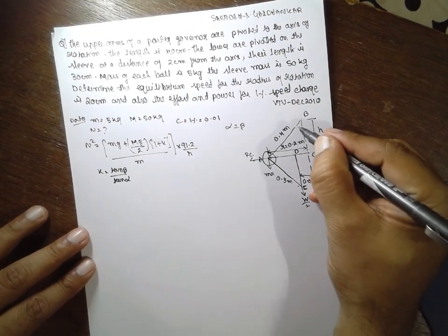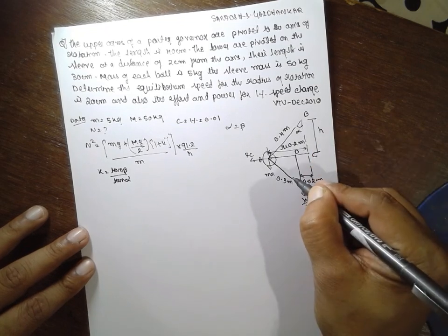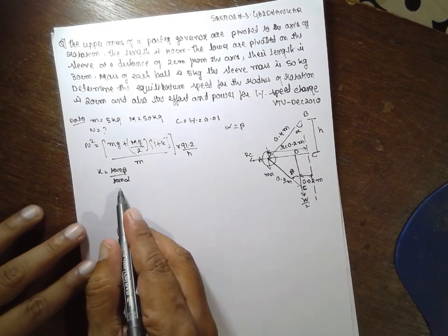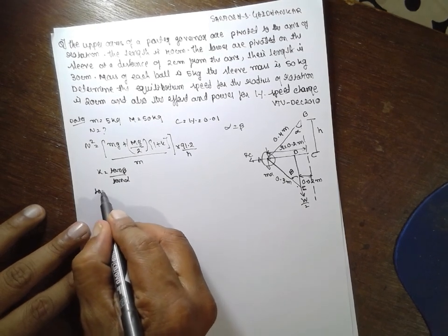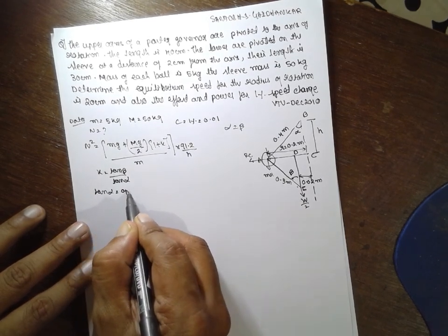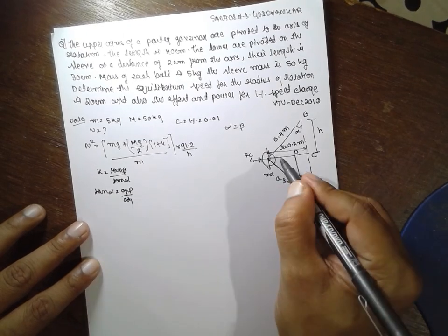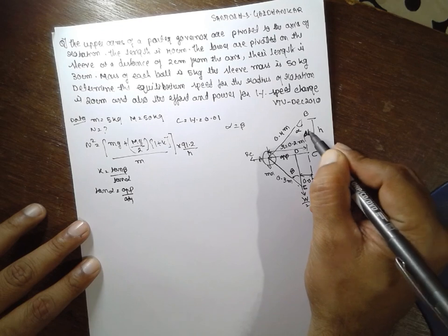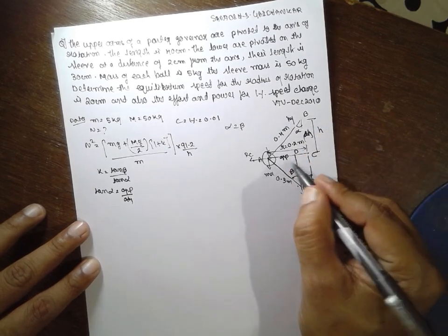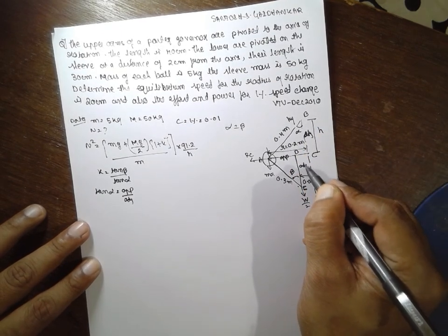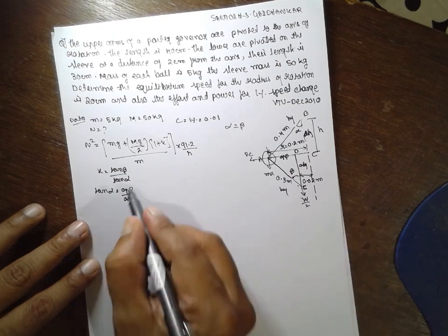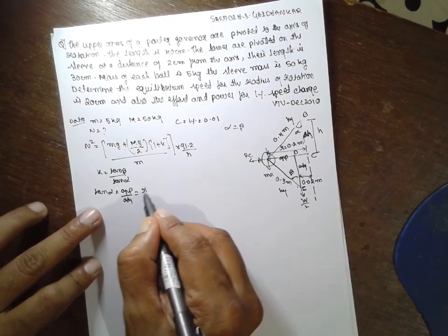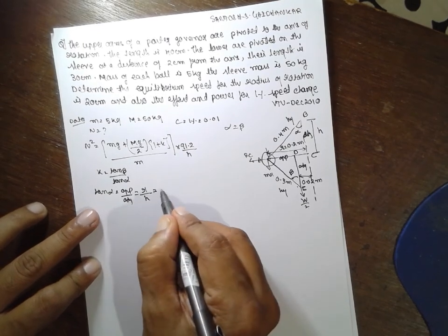This is alpha. This is beta. Now, what is tan beta? First, I will find out tan alpha. Tan alpha is nothing but opposite by adjacent. This is opposite. This is adjacent. This is hypotenuse. Similarly, this is adjacent. This is hypotenuse. What is tan alpha? The opposite by adjacent. That is r divided by h. What is r? 0.2 divided by h. What do we know? Alpha.